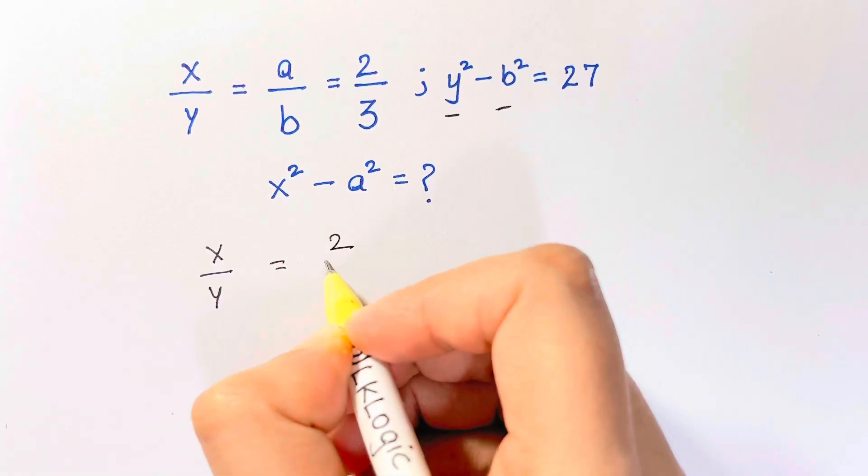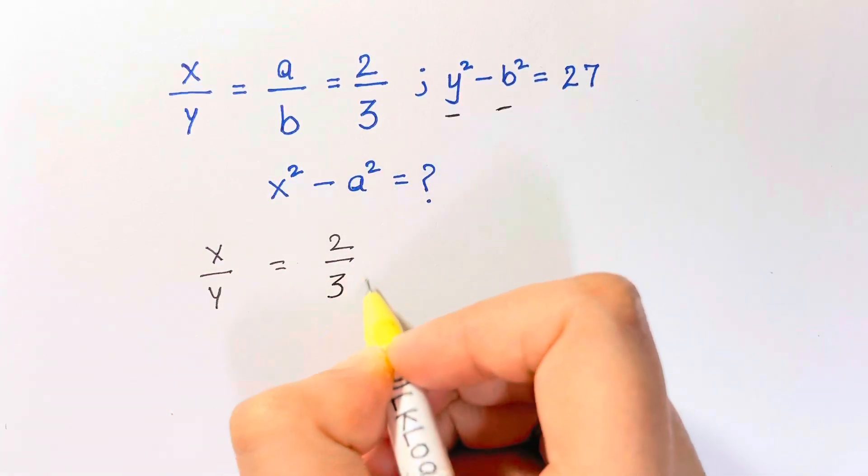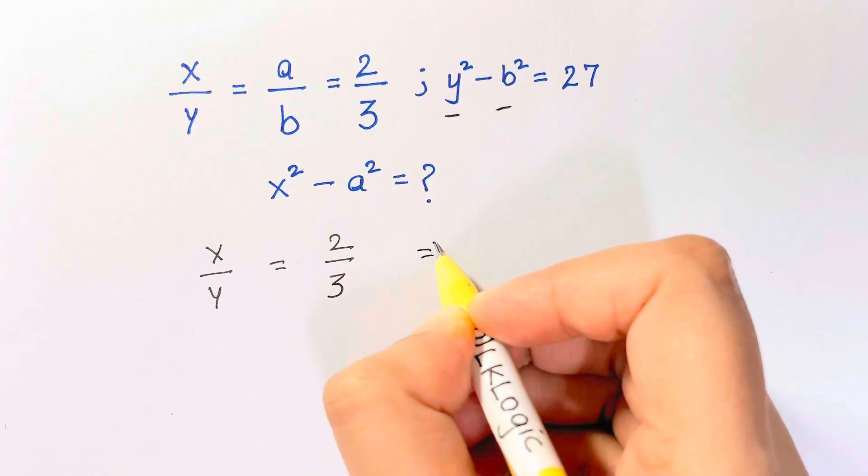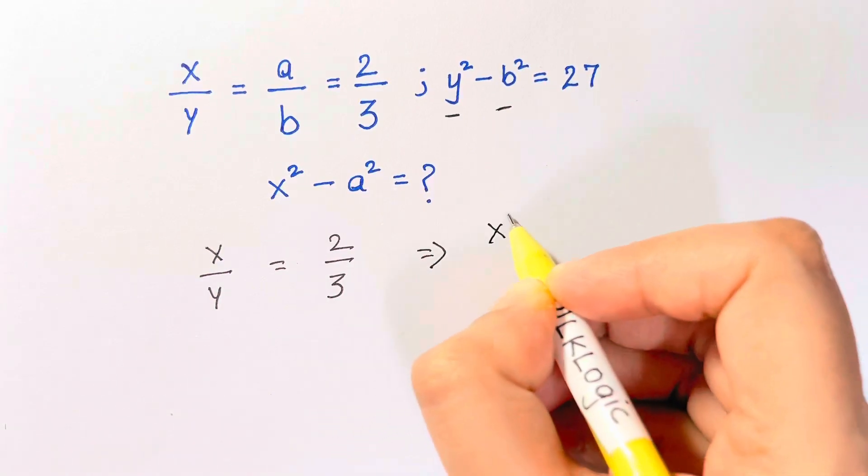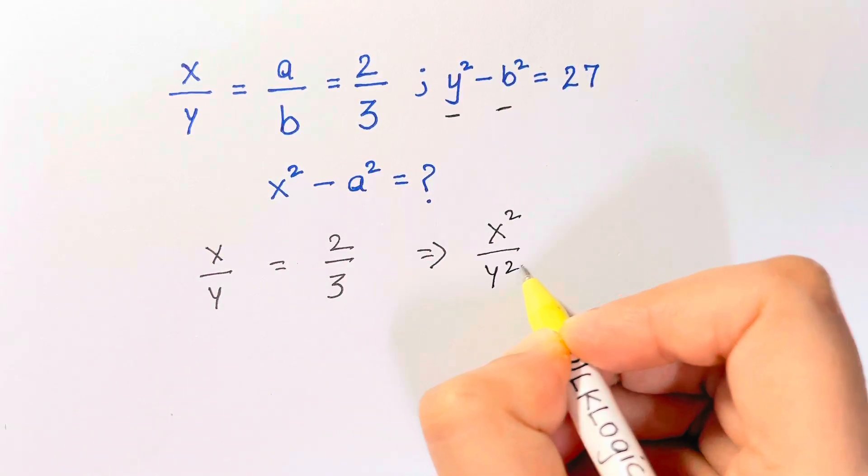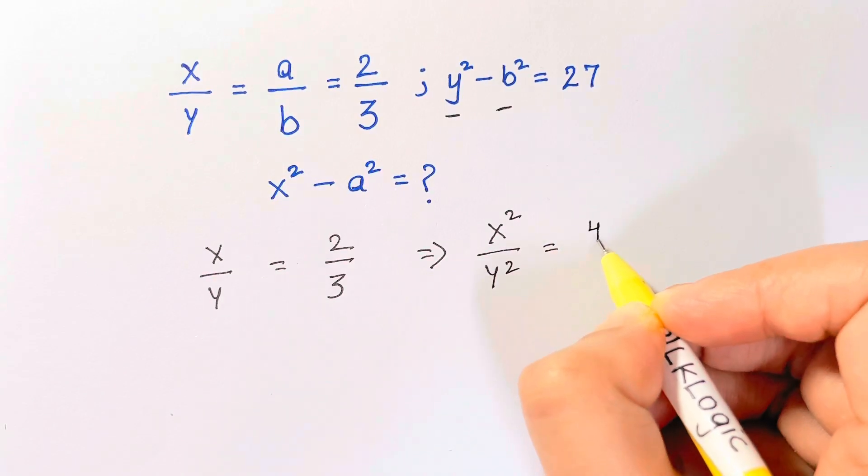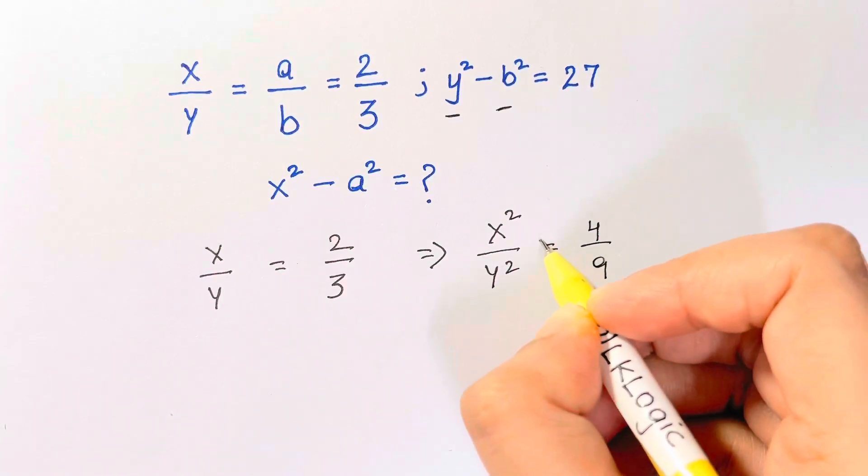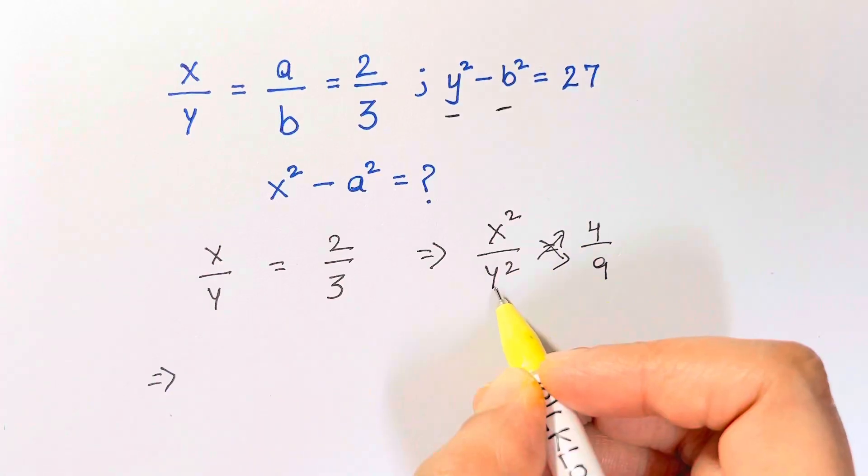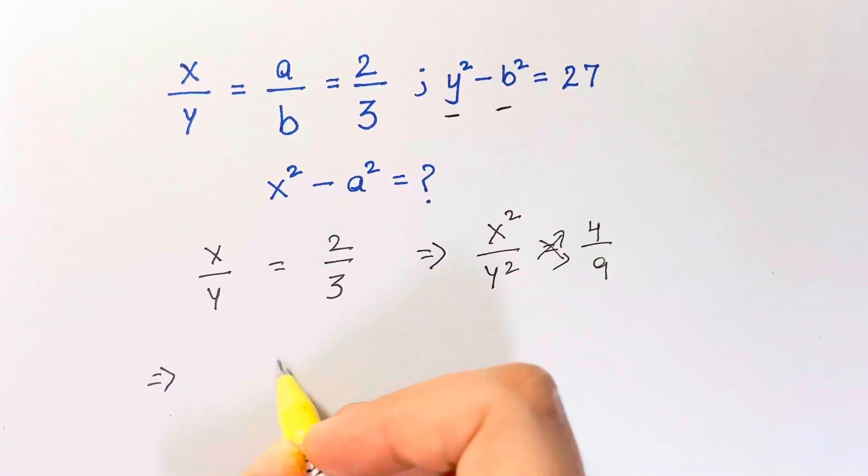x over y is equal to two thirds. Just square both sides. So what do I get? I have x square over y square is equal to four over nine. Let me just cross multiply. I just want y square, so from this I get y square is equal to nine x square over four.